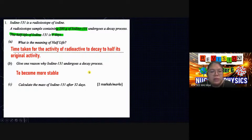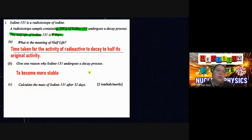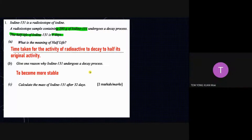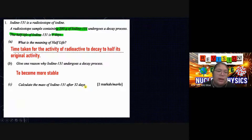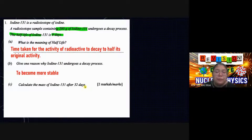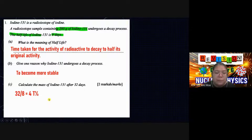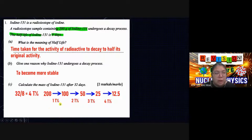Now we calculate the mass of iodine after 32 days. First, find how many half-lives are in 32 days: 32 divided by 8 equals 4 half-lives. We don't need to memorize a formula — just use the concept. Starting from 200 grams, divide by 2 each half-life: 200 → 100 → 50 → 25 → 12.5. After four half-lives we have 12.5 grams.